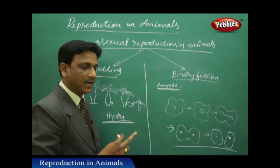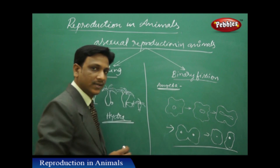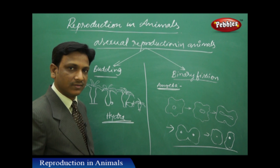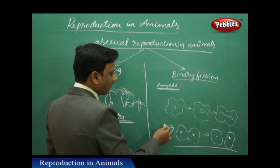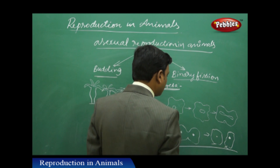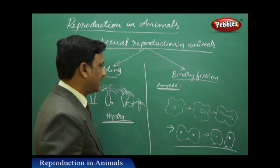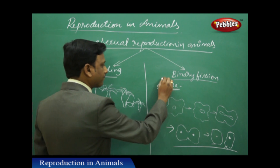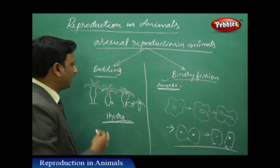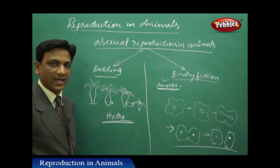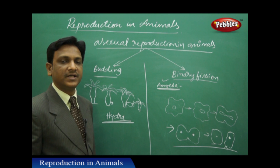One parent amoeba splits into two daughter amoeba — this is binary fission. Binary means two; fission means division. The body of amoeba is split into two young amoeba. Both are daughter cells which develop into young ones. Binary fission is one method of asexual reproduction observed in animals, and budding is the other method. Animals show some other types of asexual reproduction, but those will be studied in higher classes.